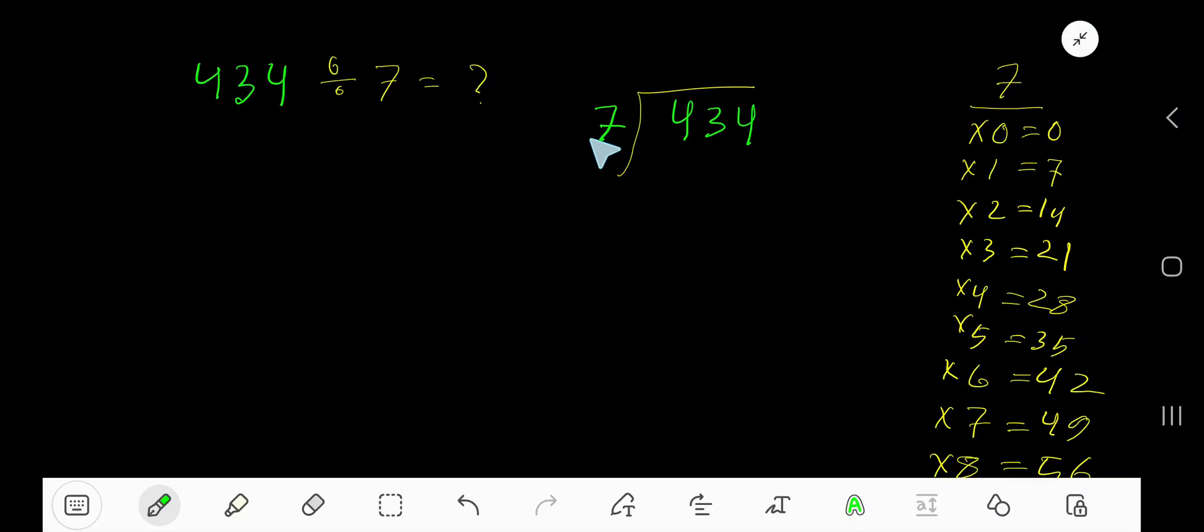434 divided by 7. Here 7 is the divisor, so we need the multiplication table of 7. 7 times 0 is 0, 7 times 1 is 7, 7 times 2 is 14, 7 times 3 is 21, 7 times 4 is 28.